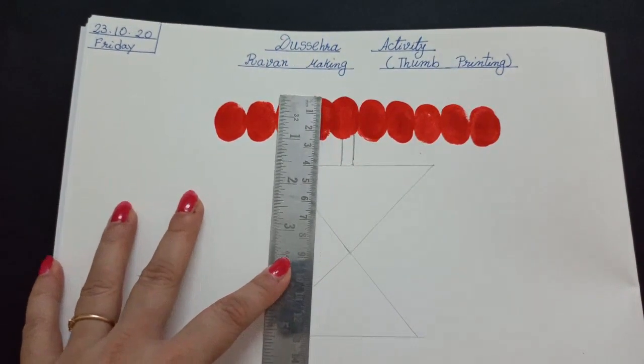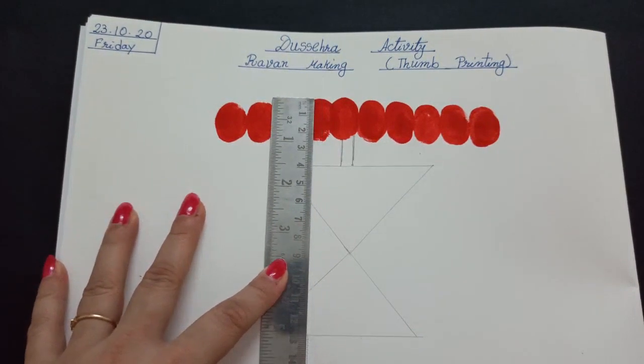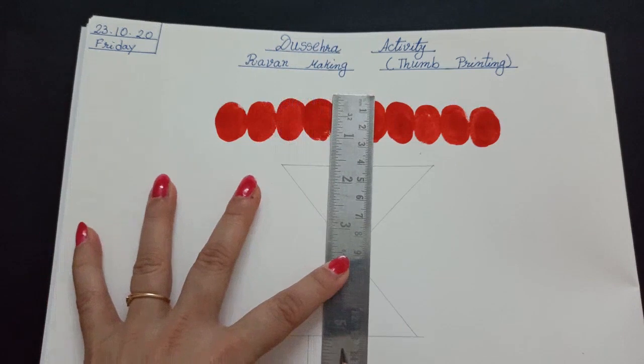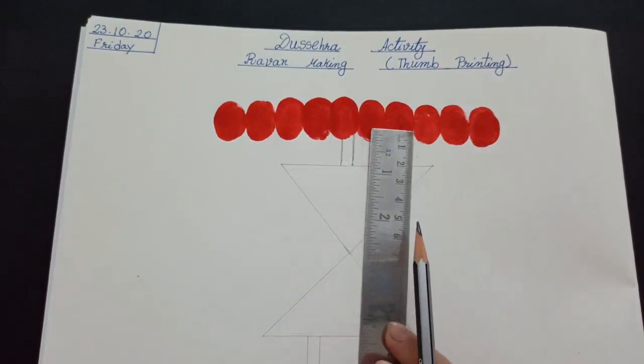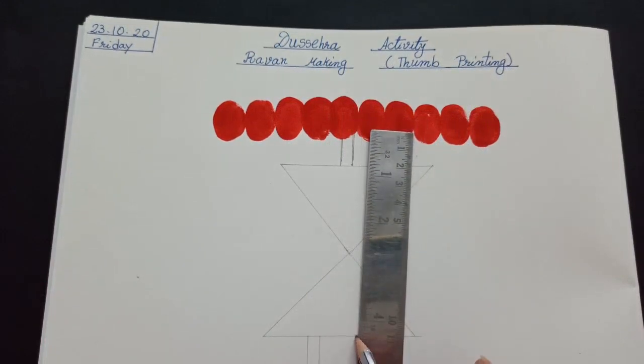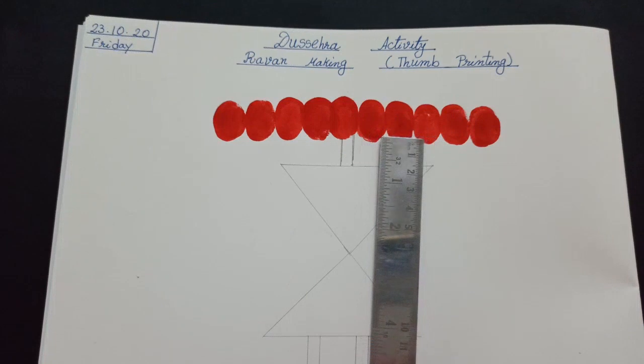Now, we will make Ravan's leg. For leg, again, two standing lines. Like this. And here also. Two standing lines. Like this.